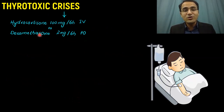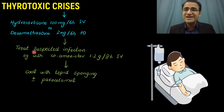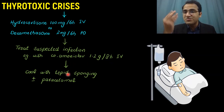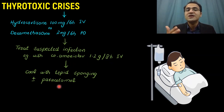You can also give hydrocortisone 100 mg 6-hourly IV or dexamethasone 2 mg 6-hourly orally. If you suspect infection as a cause of thyrotoxic crisis, treat it with co-amoxiclav 1.2 grams every 8 hours IV. Since the patient is having hyperthermia, give cooling blankets and cold sponging to control temperature, reduce clothing layers, and start paracetamol if needed — though cold sponging should be the priority before paracetamol.